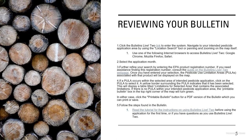When reviewing the bulletin, you click Bulletin Live 2 to enter the system, navigate to your intended pesticide application area using a location search, and select your application month — it's automatically generated but you can choose a future month. You can further define your research by entering the EPA product registration number. If a PULA occurs within the selected area, you click on the area, a border surrounding it indicates it's been selected, and it gives you a table of the products you can't use.